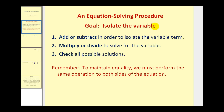For a two-step equation, it's recommended we perform the following steps. First, we add or subtract in order to isolate the variable term. And then second, we multiply or divide to solve for the variable. And then of course we should check any possible solutions. Remember to maintain equality we must perform the same operation to both sides of the equation.